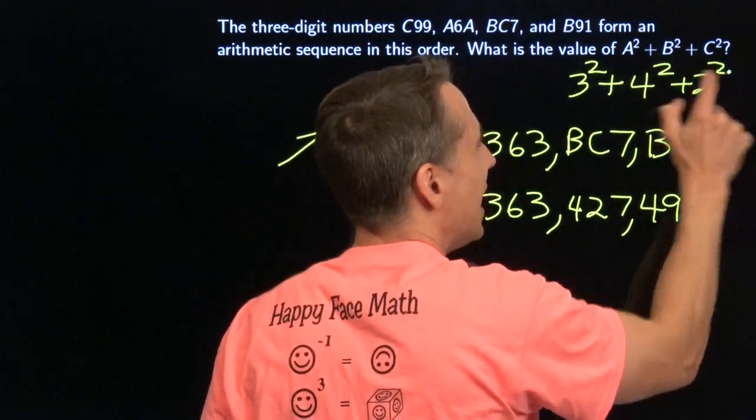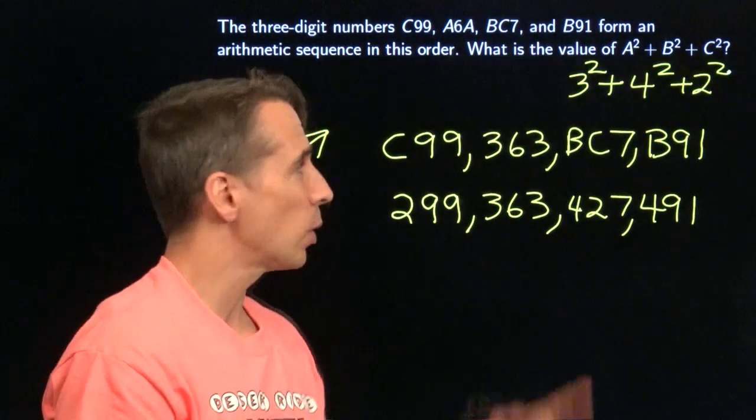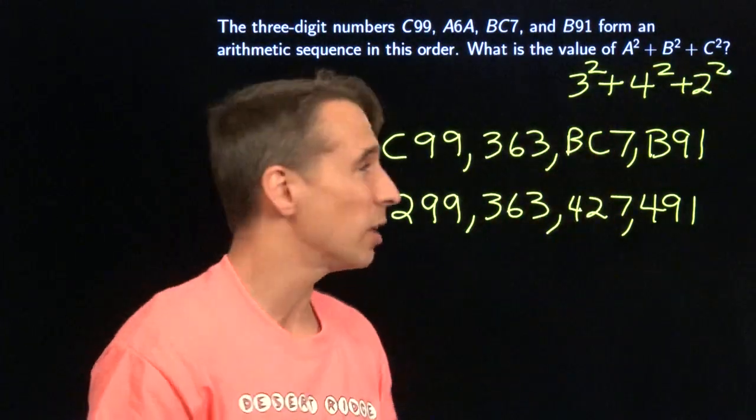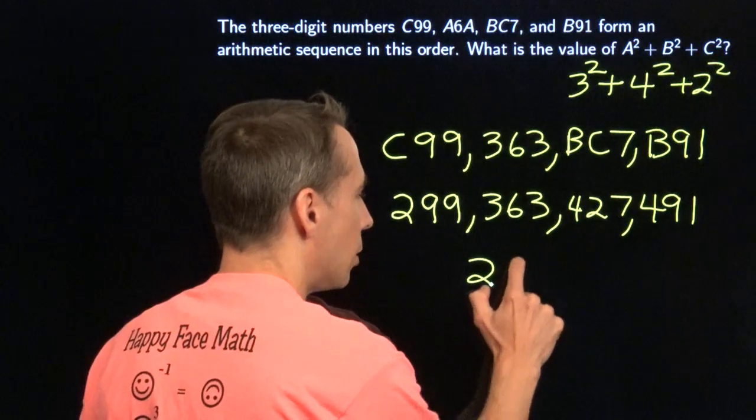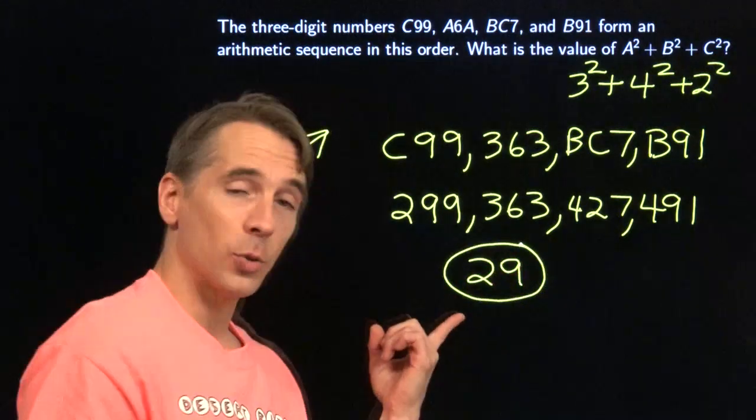So our a squared plus b squared plus c squared is 9. Plus 16 gives us 25. Add on another 4. And we have 29.